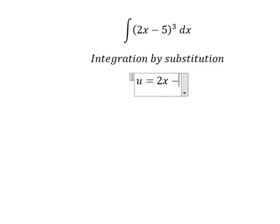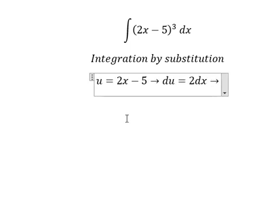equals to 2x minus 5. We need to differentiate both sides, and we have du = 2dx. Because we don't have the 2, we need to divide both sides by 2.